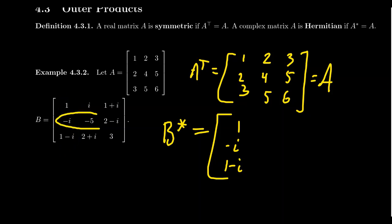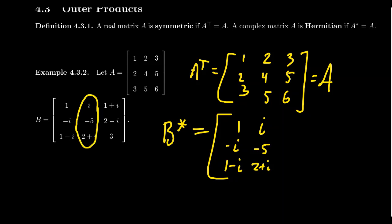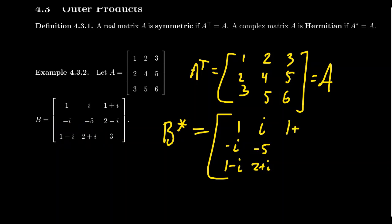Moving to the second row, turning it into a column and taking conjugates gives us i, negative 5, and 2 + i — the conjugate of a real number is just itself. Notice that this agrees with the second column of B. Taking the third row and turning it into a column gives 1 + i, 2 − i, and 3. You'll see that this is identical to the original matrix B, so this is an example of a Hermitian matrix.